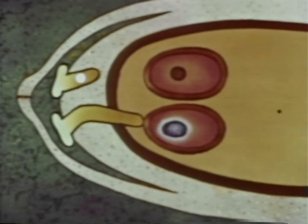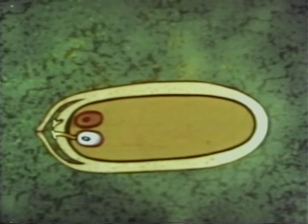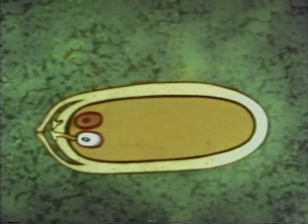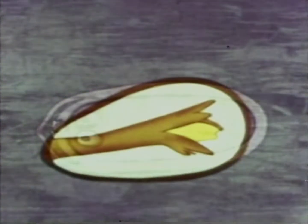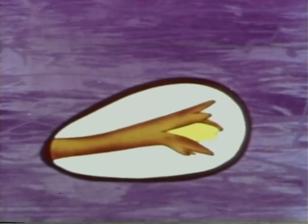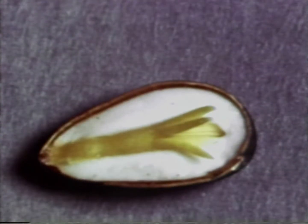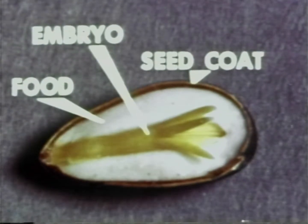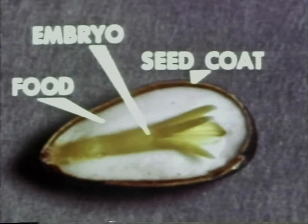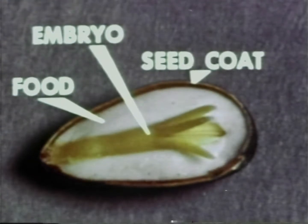The pollen grains push out their tubes and the male cell called the sperm moves down the tube and fertilises the egg cell. In each ovule one sperm fertilises one egg cell. After fertilisation the fertilised egg cell grows and develops into a seed. This takes more than a year. The pine seed is made up of a seed coat on the outside and inside the food store that the embryo needs when it begins to grow into a new plant.